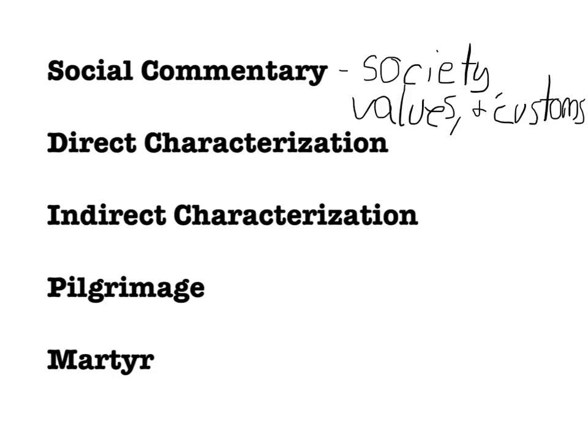The two big literary terms we're going to cover are direct characterization and indirect characterization. Direct characterization is very simple — it presents direct statements about a character. For example, when Geoffrey Chaucer makes a statement that the knight followed chivalry, truth, and honor, or that the squire is about 20 years old and has blonde locks, that's direct characterization because we're saying something direct about the character.